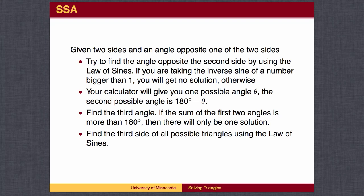When given two sides and an angle that is not between the two sides, there may be two answers. Use the Law of Sines to find both possibilities for the second angle. If you're trying to find the inverse sine of a number larger than one, you will get no answers.